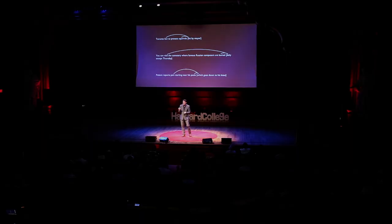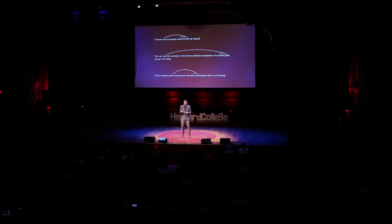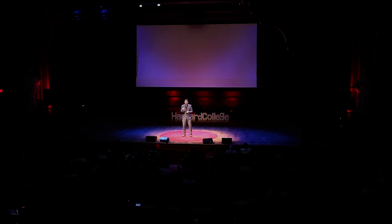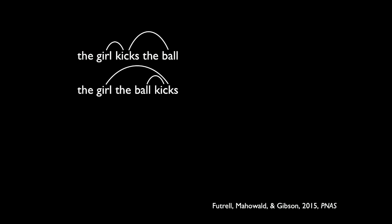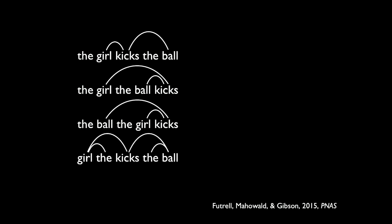We wanted to look across languages and compare how languages actually make connections in sentences to some baseline. This project was led by Richard Futrell, a graduate student at MIT. He took all the sentences from 37 languages, looked at the dependency connections, and compared those to the same word string connected in the same way but with words scrambled. So instead of 'the girl kicks the ball,' where 'girl' depends on 'kicked' and 'ball' depends on 'kicks,' he compared it to scrambled orders like 'the girl the ball kicks' or 'the ball the girl kicks.' He did that 100 times for every sentence in all 37 languages.